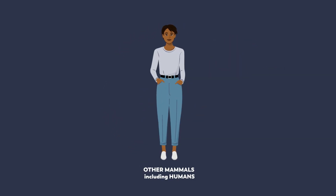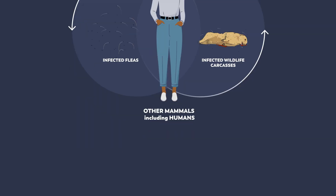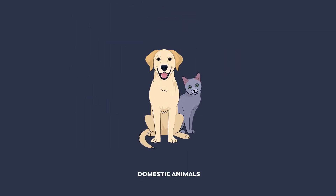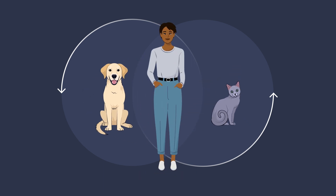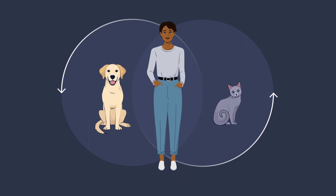Other mammals, including humans, can become infected after being bitten by an infected flea or handling the carcasses of animals that died of plague. Domestic pets can be infected with Y. pestis, either from infected fleas or direct contact with infected wildlife. While both dogs and cats can develop plague, cats tend to develop more severe illness. Both cats and dogs can transmit the infection to their owners indirectly through flea bites or directly by coughing in cases where the pet has pneumonic plague.